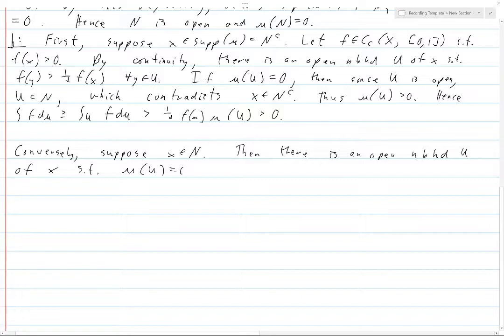Then by Urysohn, there is some F in C, C, X, 0, 1, such that F is 1 at X, and the support of F is contained in U.